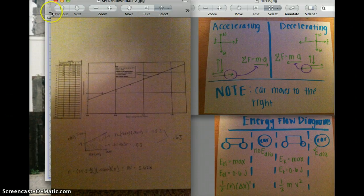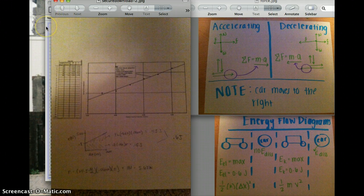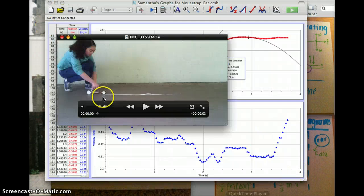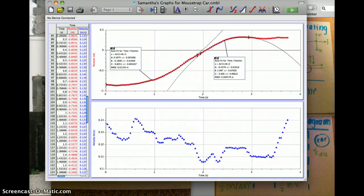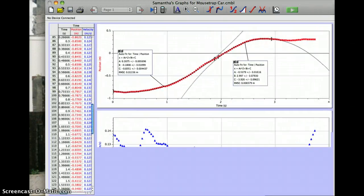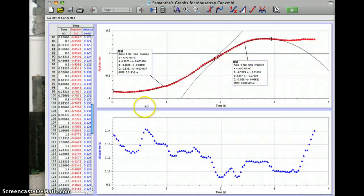Next I used Tracker after I made a video of my car. With Tracker I was able to do the position time graph and the velocity time graph, which helped me find the acceleration.